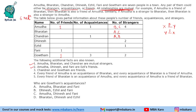Next, Amudha, Dinesh, and Fani are Ezil's friends. So A, D, F are friends of Ezil. That does not mean Ezil has only three friends — maybe he can have more, but these three are definite. Using the same mutual relationship logic, A will have a friend E, D will also have a friend E, and F will also have a friend E. Also, Chandran and Gautam are friends, so C is a friend of G and G will have C as a friend.